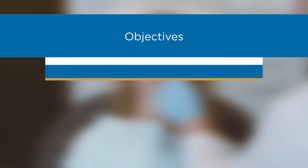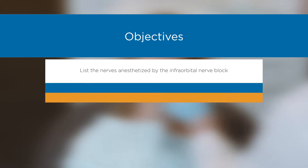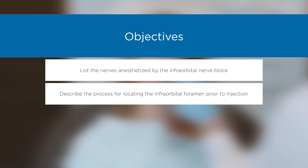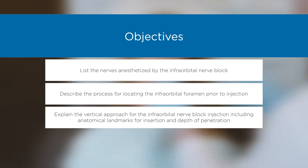Objectives: List the nerves anesthetized by the infraorbital nerve block. Describe the process for locating the infraorbital foramen prior to injection. Explain the vertical approach for the infraorbital nerve block injection, including anatomical landmarks for insertion and depth of penetration.